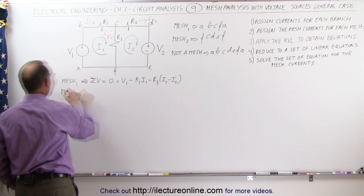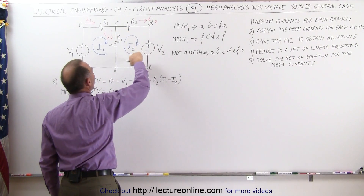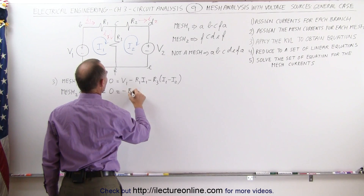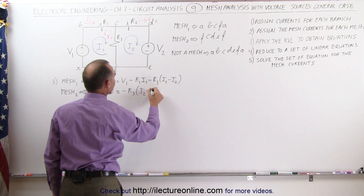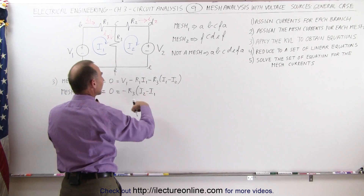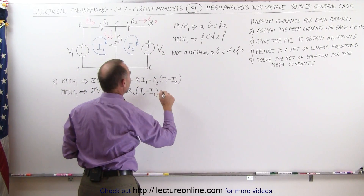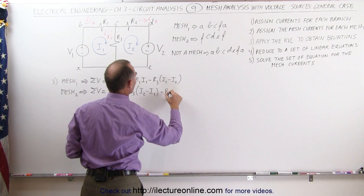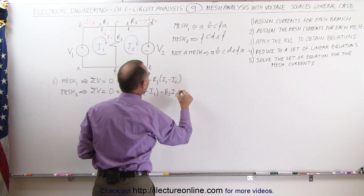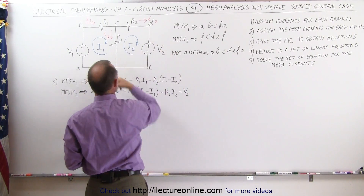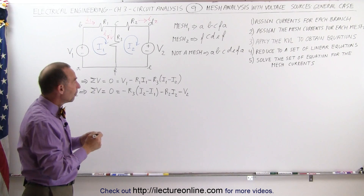For mesh 2, we sum all voltages around the loop starting at F. Going with current I2 across R3, that's a voltage drop of minus R3 times I2, but a voltage rise relative to I1, so we subtract I1, giving minus R3 times (I2 minus I1). Coming around, we cross R2 with I2 — that's a voltage drop of minus R2 times I2. Then we cross the voltage source from positive to negative — that's a voltage drop of minus V2. Returning to F, everything adds up to zero. Those are the two KVL voltage equations.